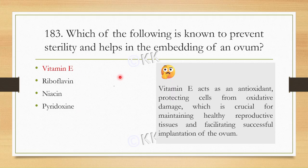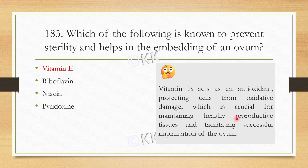Vitamin E is also known as the anti-sterility hormone. Vitamin E has antioxidant properties, which protect our cells from oxidative damage. It also plays a crucial role in maintaining our reproductive tissue health — including the ovary and corpus luteum — protecting them from oxidative damage. It also facilitates successful implantation of the ovum.